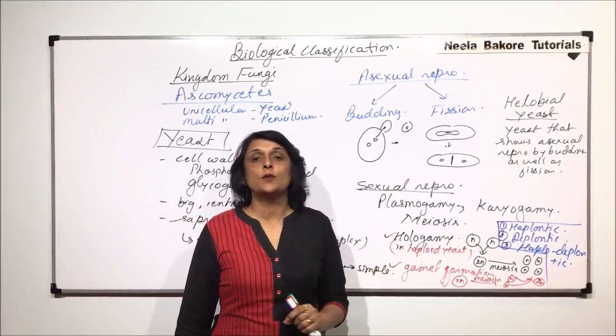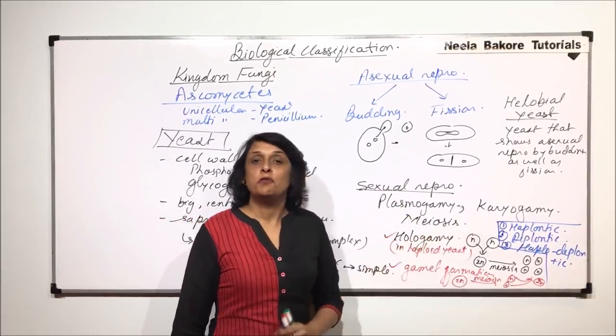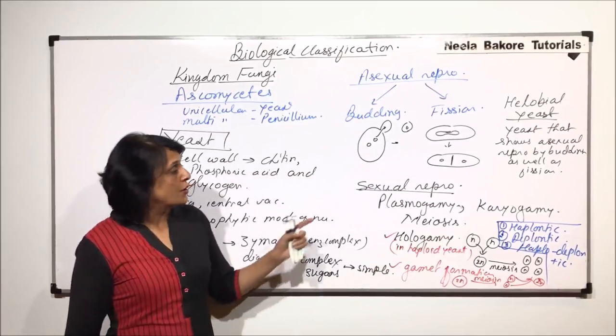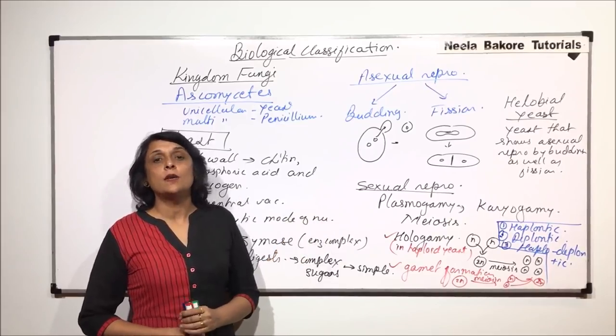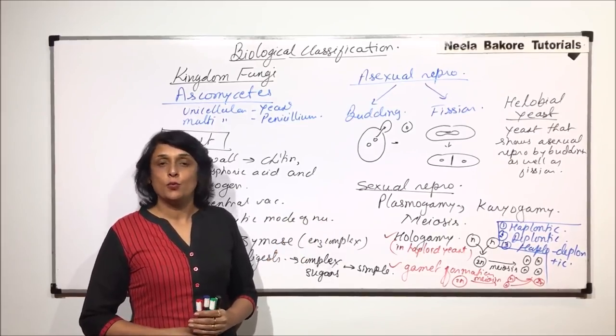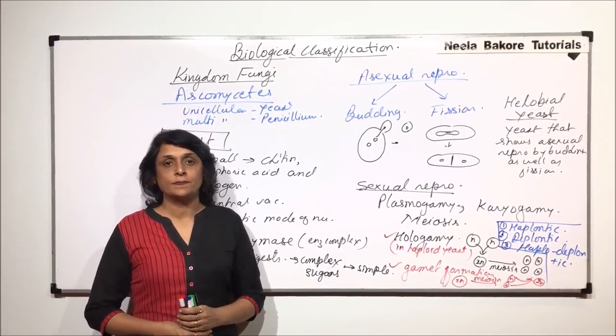So, there are three different species which exhibit these three different types of life cycle. So, now, in the next part, we will start with these three types of life cycles. And we will see which species exhibit which type of life cycle.